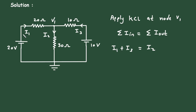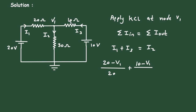Let's write I1 in voltage form. It will be (20 minus V1) divided by 20 Ohm, plus I3. I3 in voltage form will be (10 minus V1) divided by 10 Ohm, and this is equal to I2. Now I2 will be (V1 minus 0) divided by 30 Ohm.